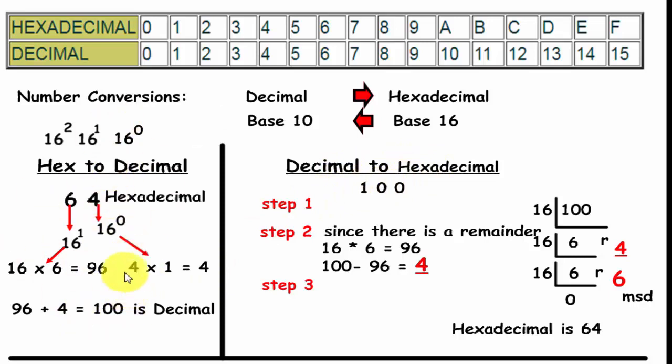Looking over here on this side first you'll notice we have the number 64 which is hexadecimal. Now the first number is to the power of 16 to the 0. Which means simply any number here, in this example it's a 4, will be multiplied by a 1.